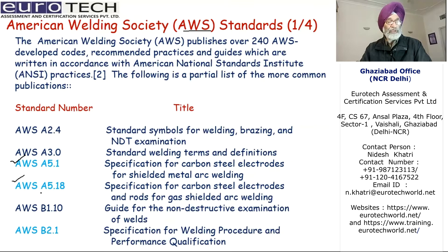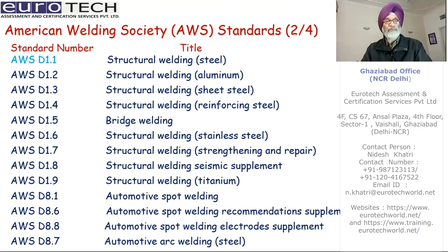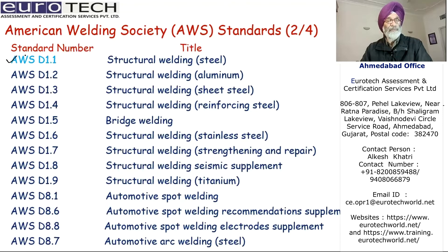Secondly, AWS A5.18, which is the specification for carbon steel electrodes for the GMAW process. And coming to AWS B2.1, which is basically the specification for welding procedure and performance qualification, primarily for the qualification of welders. The important one here is AWS D1.1, which is for structural welding of steel. Based on these, the WPS, WPQR, and the testing of welders is being done.